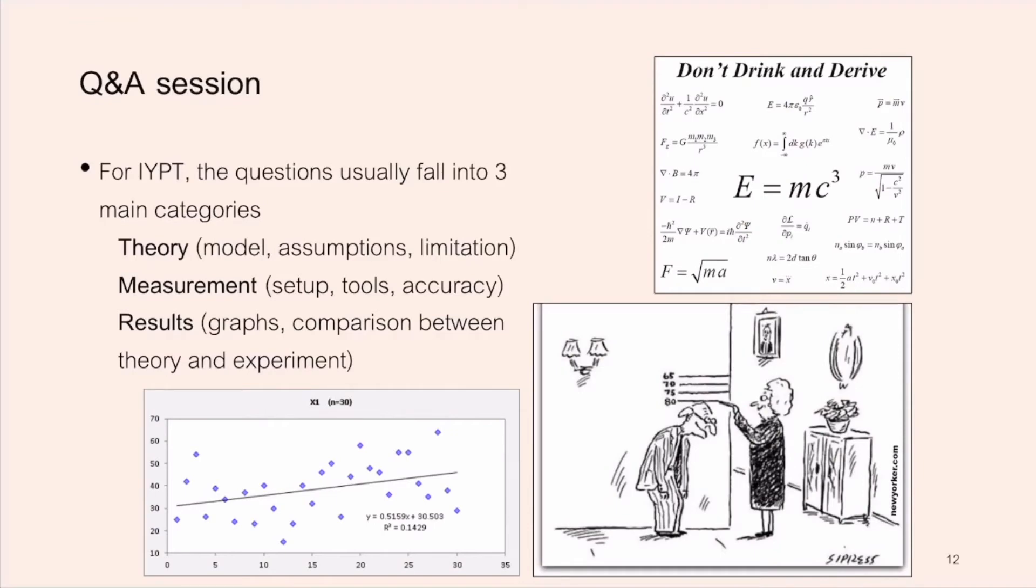For IYPT, the questions usually fall into three main categories. Theory. Questions are about model, assumptions, and limitation. People ask this kind of question to verify your physics knowledge. Measurement. Questions are about setup, tools, and their accuracy. The jurors might ask the question to justify the tool that you use. Results. This includes graphs and how the theory and experiment compare.